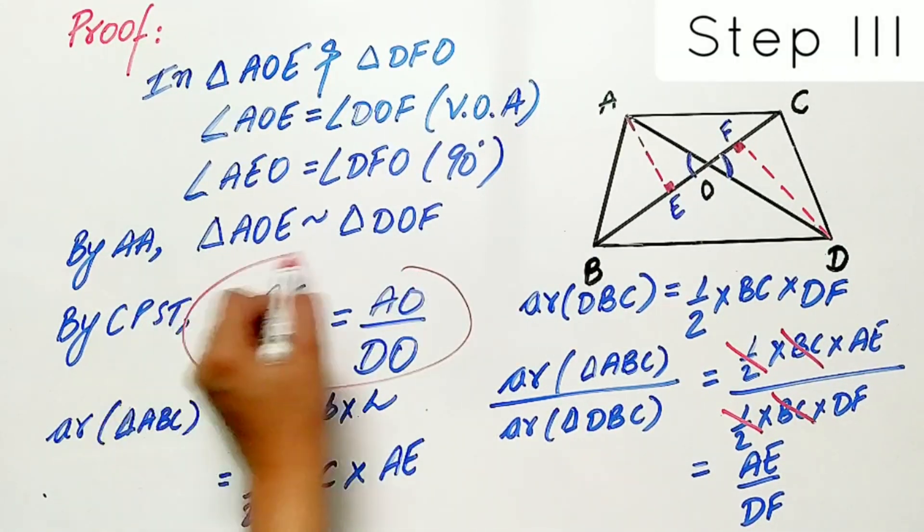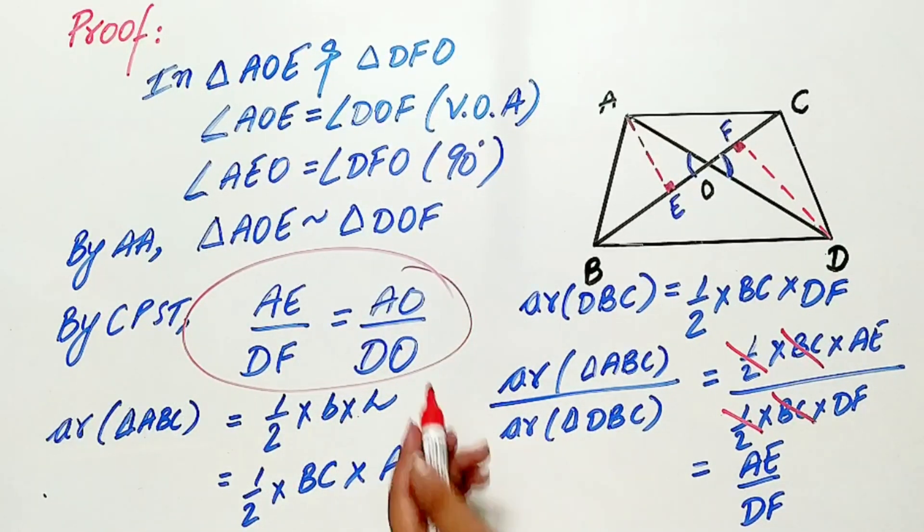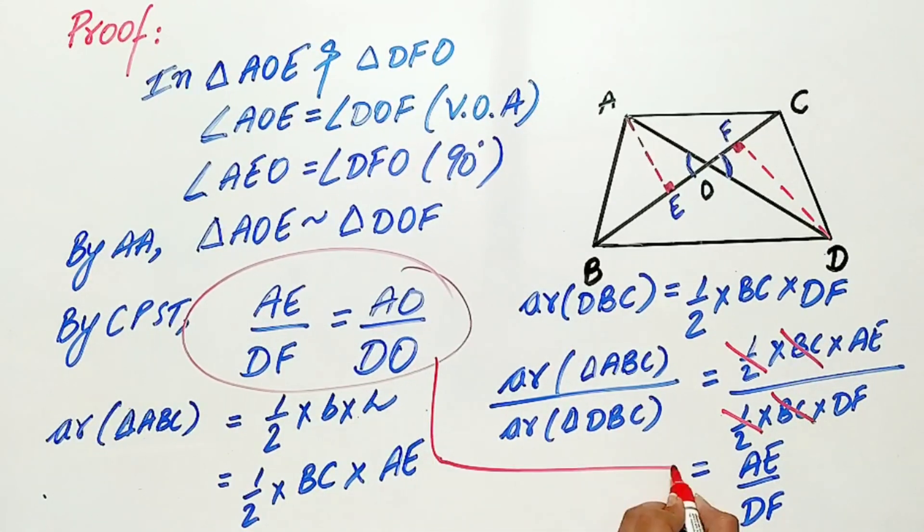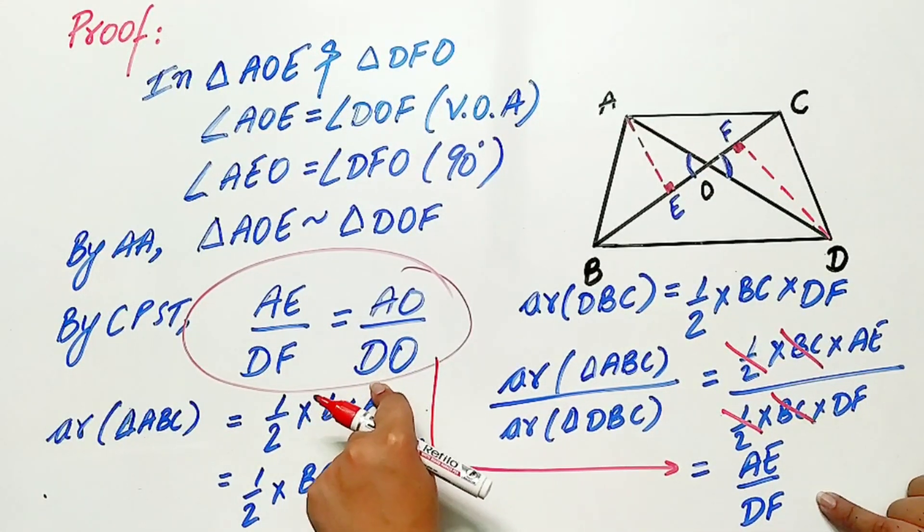We have already proved AE by DF is equal to AO by DO. So, substitute AO by DO in place of AE by DF.